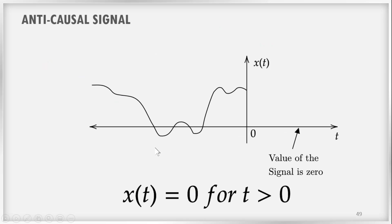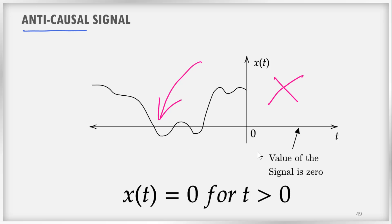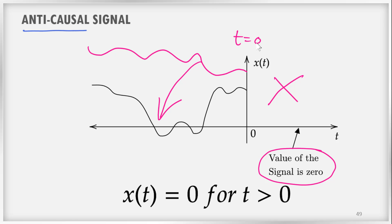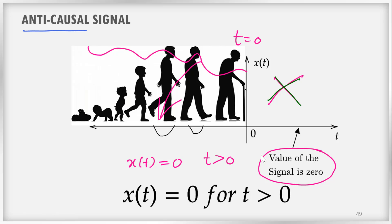There is one more class called anti-causal signals. From the word itself it is clear that it is purely opposite to a causal signal — the signal is present in the negative time axis but absent in the positive time axis. The signal value is 0 in the positive time axis. The signal was present in the past, came and stopped at time t=0, and is absent from t=0 onward. Mathematically, x(t) = 0 for t greater than 0. Such signals are known as anti-causal signals.